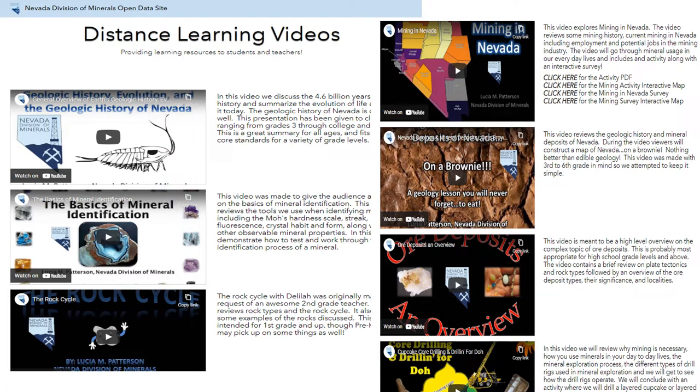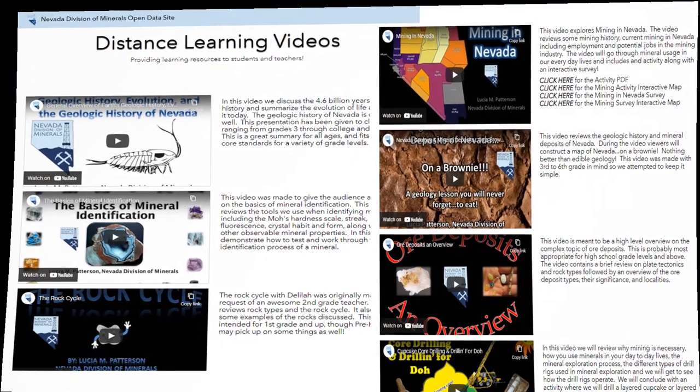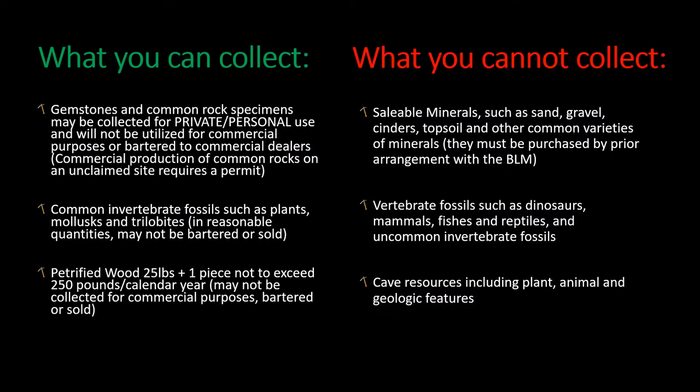Okay, let's move on to the topic at hand. So what exactly can you collect? Well, you can collect gemstones, common rock varieties, invertebrate fossils, and petrified wood for private or personal usage if they are not utilized for commercial purposes, used for trade, or bartered.